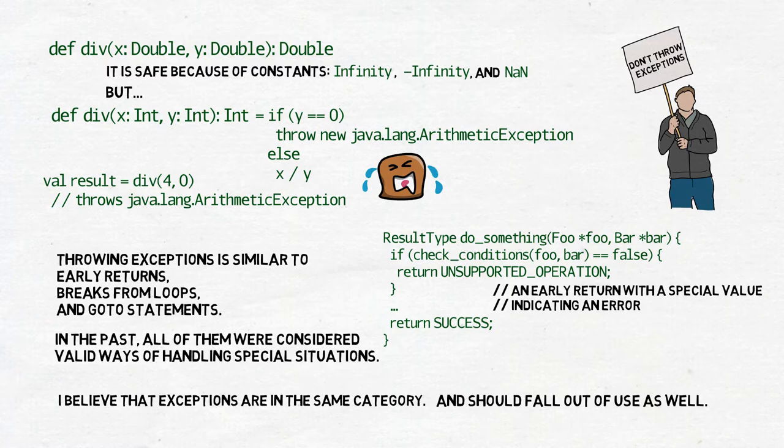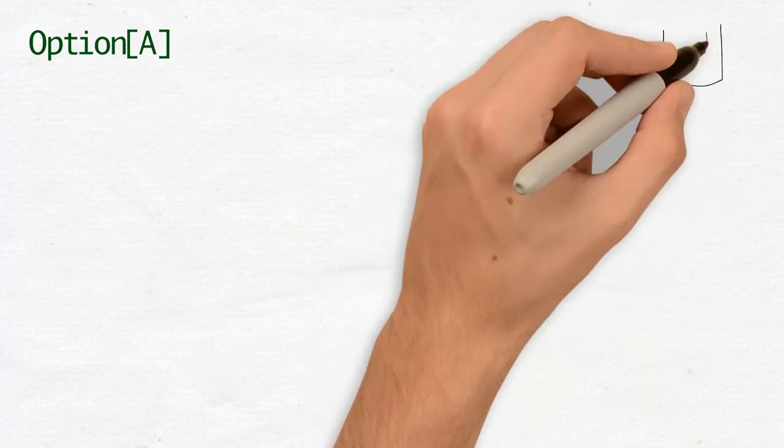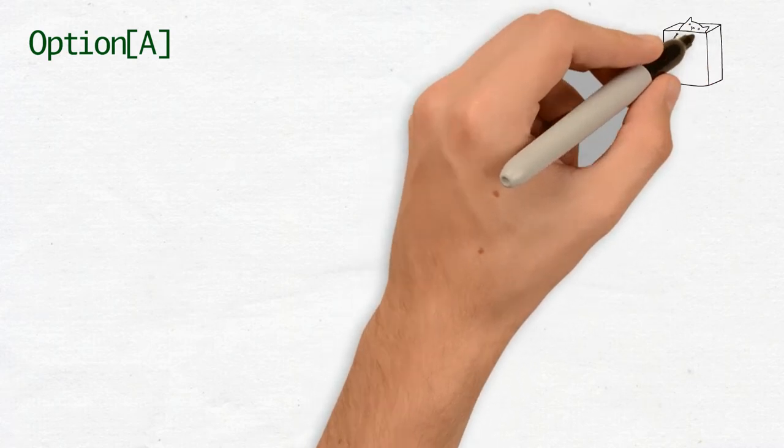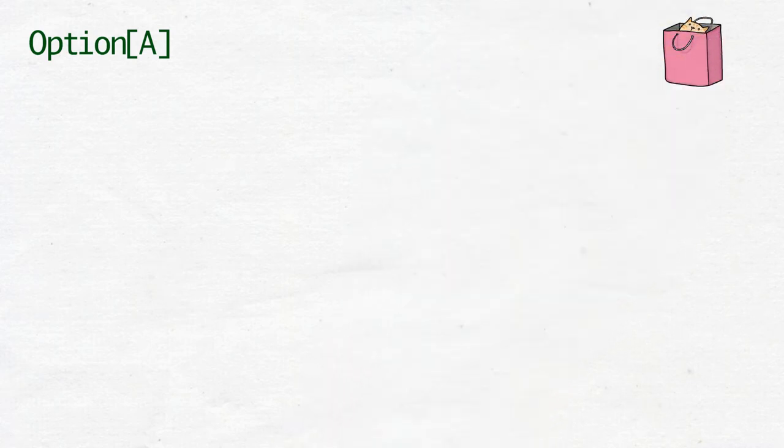Fortunately for us, there are a few tools in functional programming that we can use. Option is the simplest interesting monad there is. Well, okay, you can always define flatmap on the unit type. It will do nothing, but yay, it's a monad. That's why I say that option is the simplest interesting monad, not just the simplest monad.